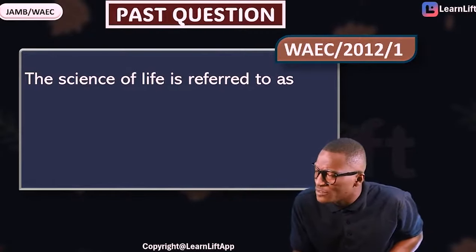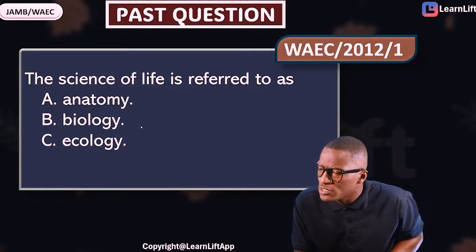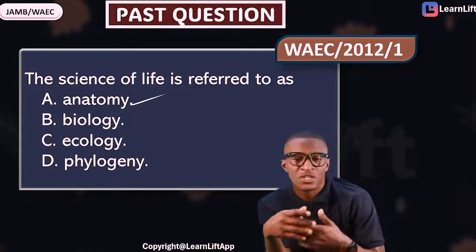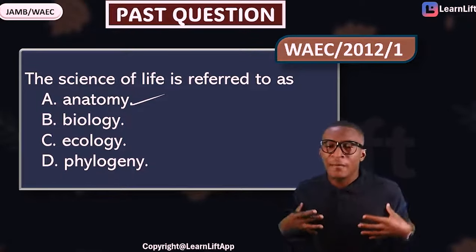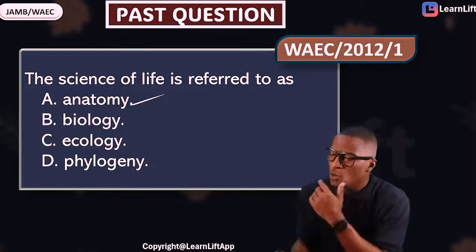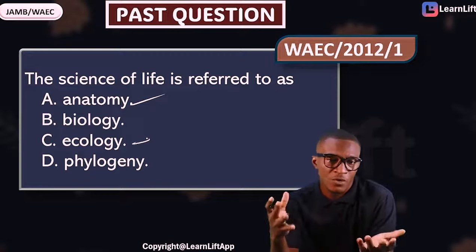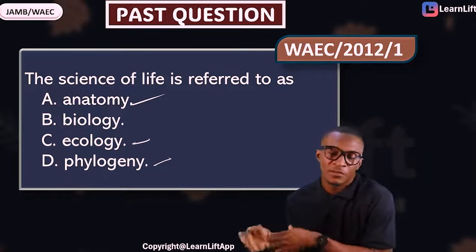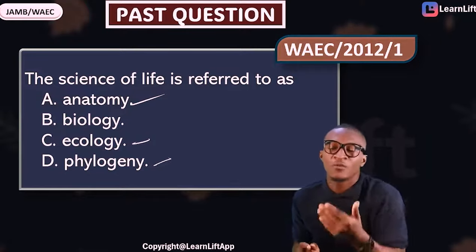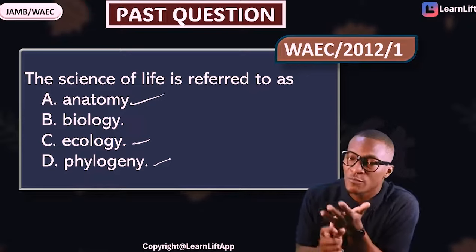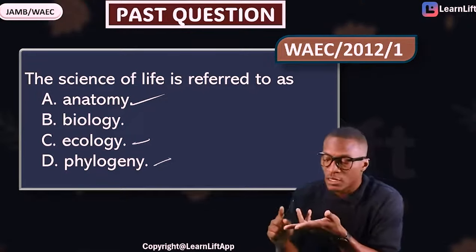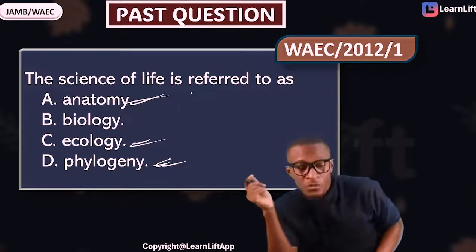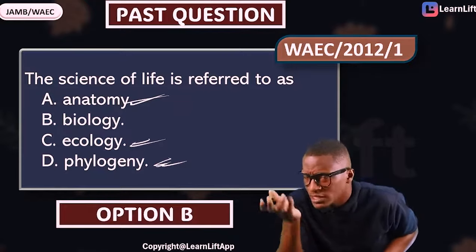Let's try the first past question — JAMB 2012 question one. The question says the science of life is referred to as: A) anatomy, B) biology, C) ecology, D) phylogeny. Anatomy is a branch of biology about the study of structures. Ecology is about interaction between an organism and its environment. Phylogeny is the evolutionary history or line of descent of a species. The answer is biology, because biology is simply the science of life.